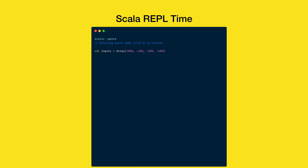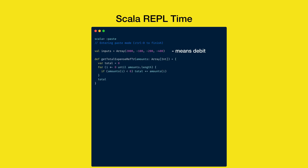Let's say we have an array of numbers denoting different transaction amounts. A negative amount represents a debit transaction. We have a function which, given an array of amounts, computes and returns the sum of all debit transactions.